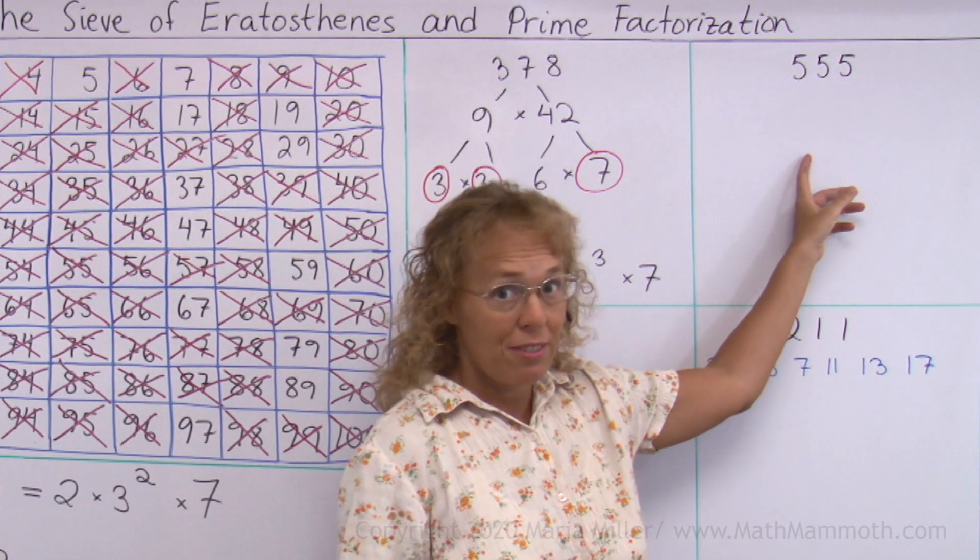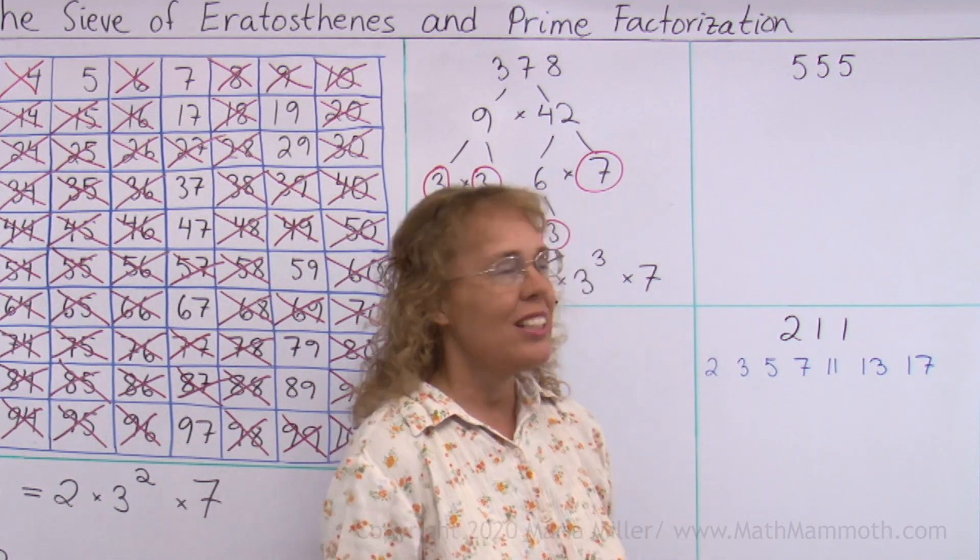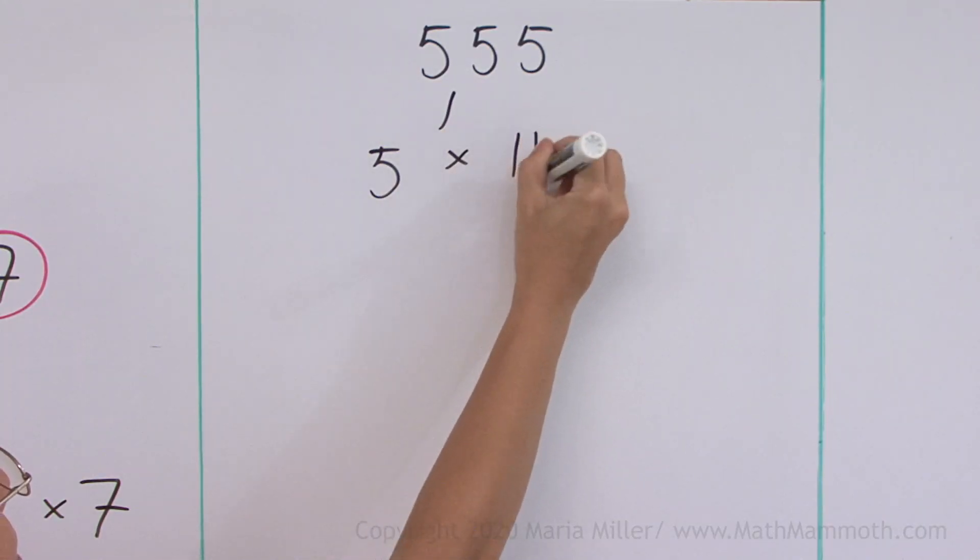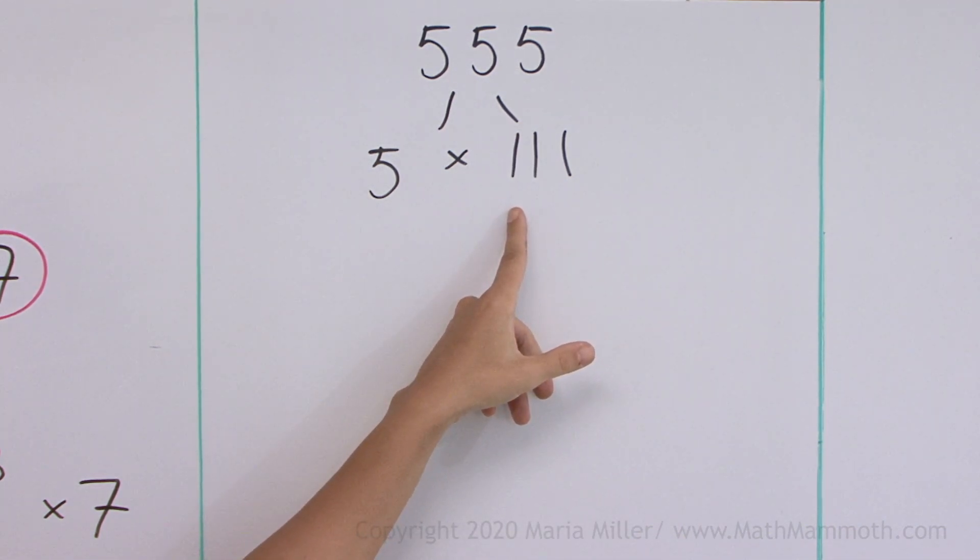Here we have 555. And we can see immediately that that number is divisible by 5. It is 5 times 111. And then 111, when you add the digits, we get 3. And 3 is divisible by 3, so the number itself is also divisible by 3.